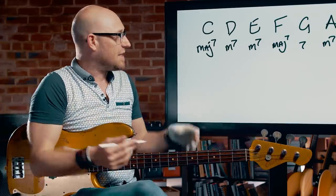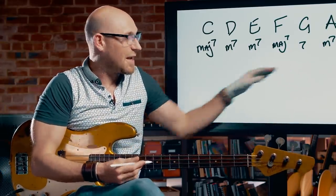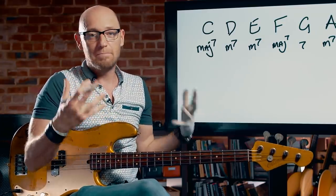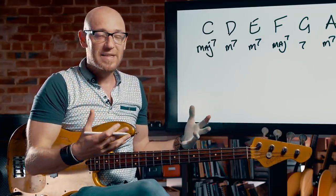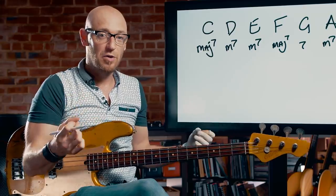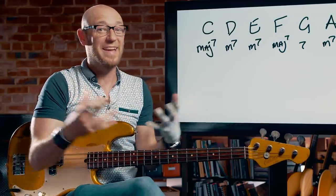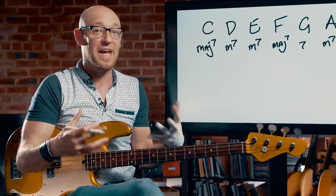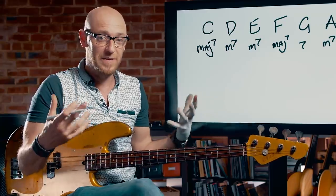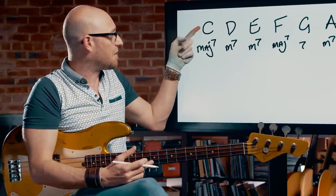The next step is the modes. Now what is a mode? A mode is the perfect scale for a chord. So every chord that exists has a perfect scale that fits with it — that's what the modes are.